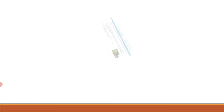Color keying is another important feature. A color key RGB value can be configured to represent a transparent pixel. If color keying is enabled, the current pixels (after format conversion and before blending) are compared to the color key. If they match the programmed RGB value, all channels (ARGB) of that pixel are set to zero. The color key value can be configured and used at runtime, and color keying is enabled through the LTDC_LxKCRS register.